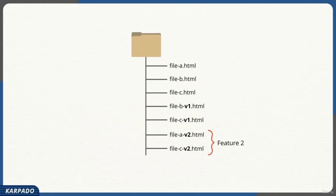If Bob asked Sundar to remove feature 2 and go back to the earlier working version, Sundar could just discard the v2 files and keep only the v1 files — as simple as that. And if a bug needed to be fixed instead, he could compare the v1 file with the v2 file using a comparing tool like Beyond Compare to pinpoint exactly what was going wrong.